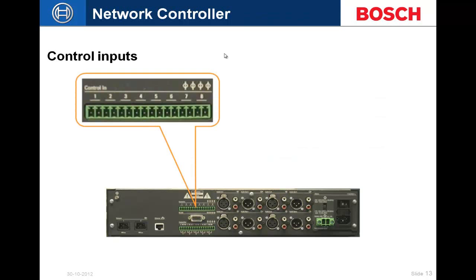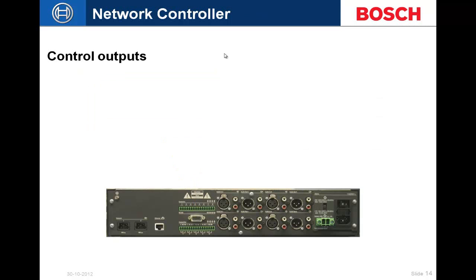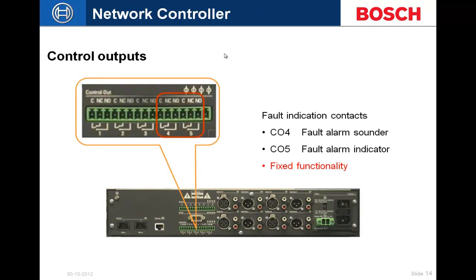On the back panel we have eight supervised control inputs. We do not recommend a common ground if you're running multiple contact closures to a location — use individual pairs of wires for each contact. Control outputs four and five are dedicated to fault alarm sounder and fault alarm indicator respectively. Those are fixed functionality and cannot be changed; they are dedicated to fault statuses.